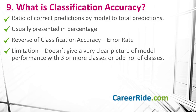Question number 9: What is classification accuracy? Classification accuracy is the ratio of correct predictions made by your model to the total predictions, usually presented as a percentage. The reverse of the classification accuracy rate is the error rate. The main limitation is that it doesn't always give a clear picture of model performance, especially when data contains three or more classes or when the number of classes is uneven. In these cases, you cannot tell if the model is working equally well on all classes or ignoring some, so even a high accuracy percentage may not confirm good model performance.